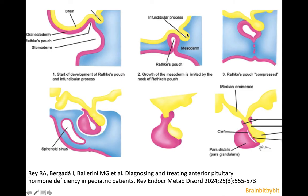The posterior pituitary has a neuroectodermal origin and is derived from outpouching of the floor of the hypothalamic region, whereas the anterior pituitary is derived from Rathke's pouch — ectoderm in a region that's also going to give rise to the palate. Rathke's pouch goes up and invaginates, and the pituitary stalk is formed by the neuroectodermal posterior pituitary tissue and the anterior ectodermal pituitary tissue wrapped around it.